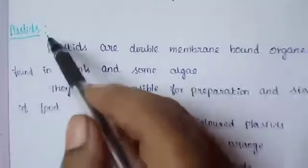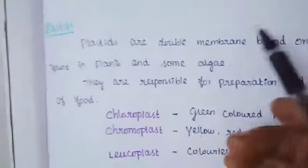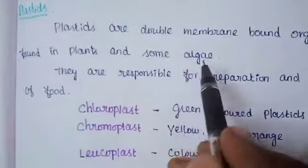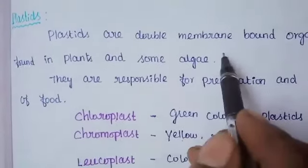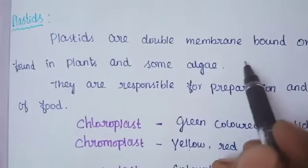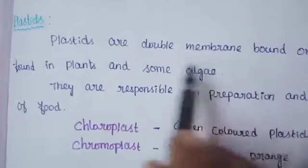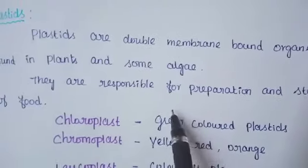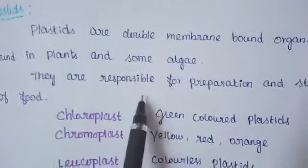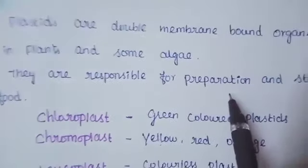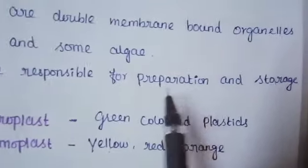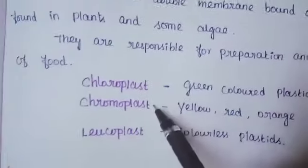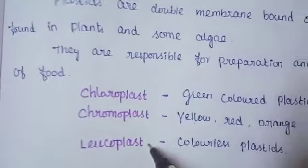Plastids are double membrane-bound organelles found in plants and some algae. Usually all cell organelles are bound in a membrane, but plastids are specifically double membrane-bound. The function of plastids is preparation and storage of food. There are three types of plastids: chloroplast, chromoplast, and leucoplast.